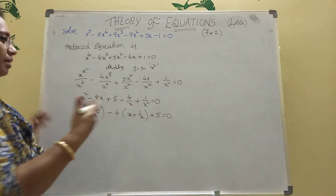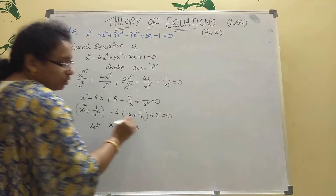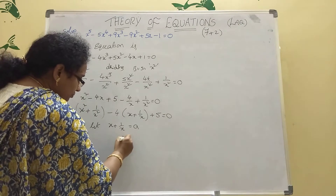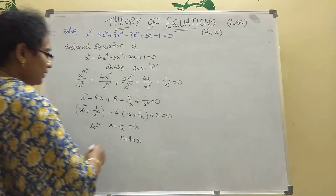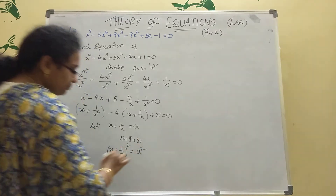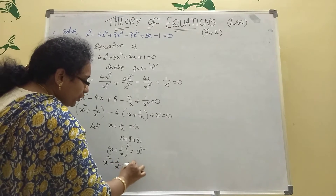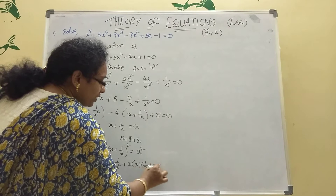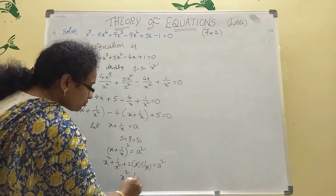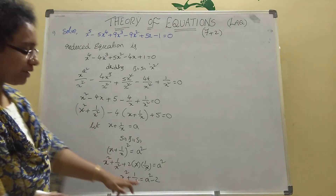Now we take a substitution — let x + 1/x = a. Same model as before. Now squaring both sides: (x + 1/x)^2 = a^2. Expanding: x^2 + 1/x^2 + 2·x·(1/x) = a^2. The x's cancel: x^2 + 1/x^2 = a^2 - 2.